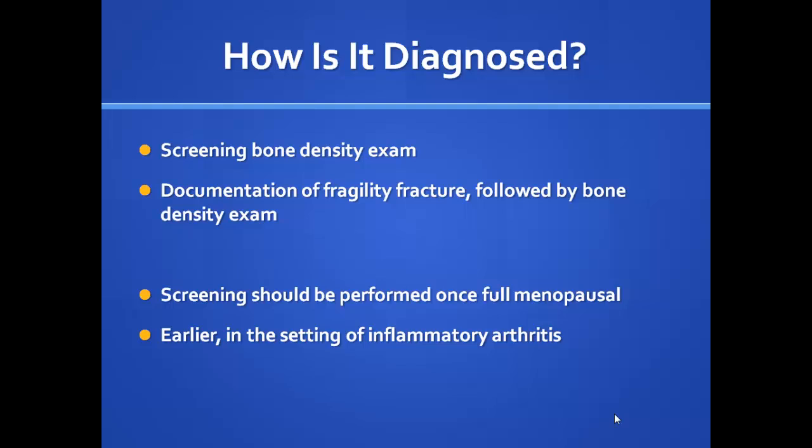How do we get a diagnosis? Either through a screening bone density exam ordered by your primary care or women's health provider once you're fully menopausal, or after you experience a fracture and then have a bone density exam. For patients with rheumatoid arthritis or other inflammatory conditions, we screen earlier than age 50 — especially those on high-dose steroid therapy.